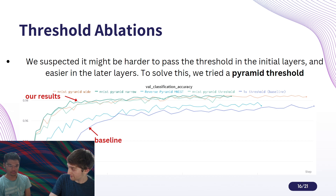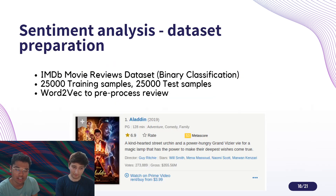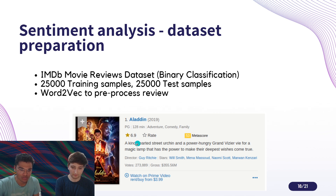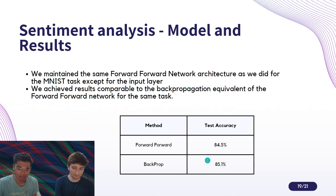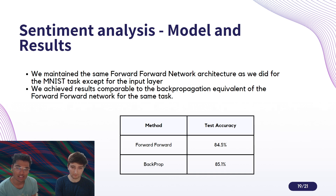We've seen that the forward-forward network does really well on image data. Now we wanted to see if it can generalize as well as neural networks trained by backpropagation. We decided to switch domains and pick up an NLP task — the IMDB movie reviews dataset, which has reviews for around 50,000 movies and the task is to classify each review as positive or negative. The forward-forward network does really well here as well; we were able to re-implement the baseline set by backpropagation. This is all for fully connected networks and not RNNs, as they are biologically implausible. To the best of our knowledge, this is the first time someone has used the forward-forward algorithm for a non-computer vision task.